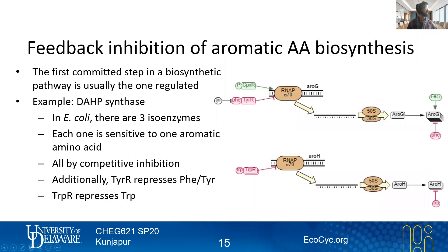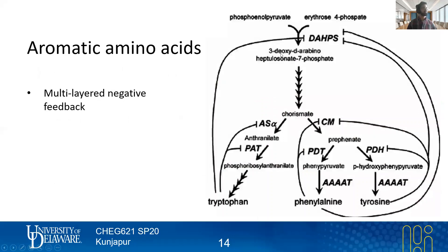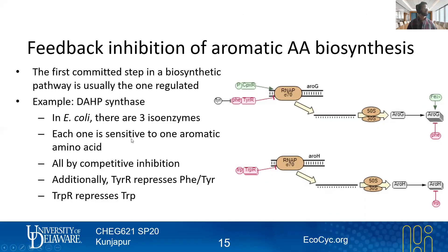The slide I ended on last time covered how there's a critical enzyme that catalyzes the first committed step — the DAHP synthase — allowing formation of a metabolite that is clearly regulated by the end products, the three aromatic amino acids. This evolved such that there are actually three different versions of this enzyme, providing post-translational regulation through enzyme inhibition. In addition to that, there are also transcriptional repression mechanisms.